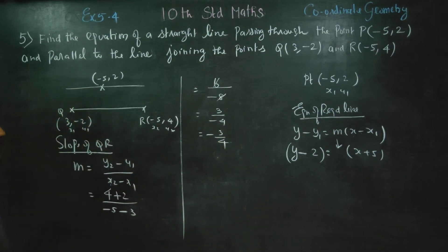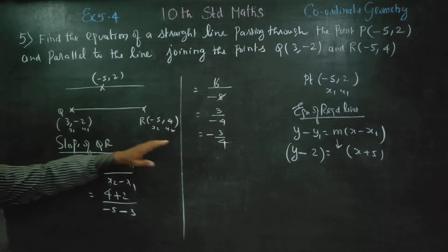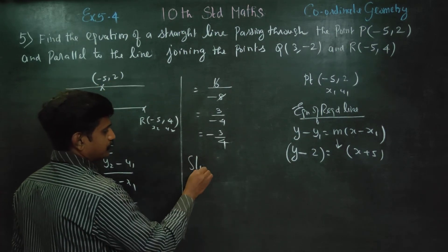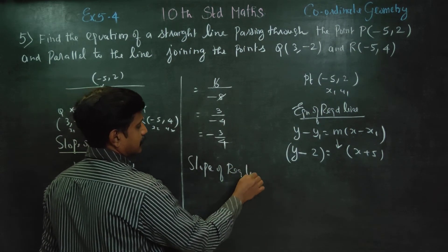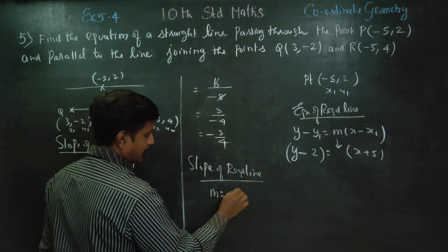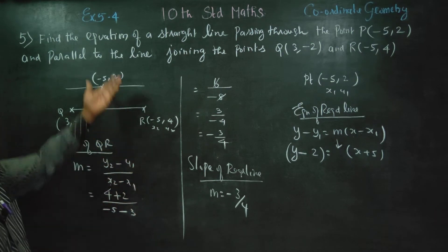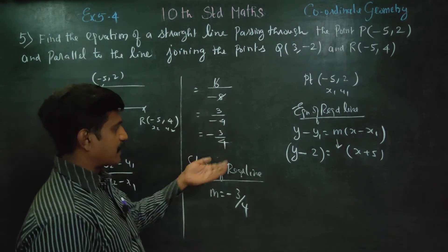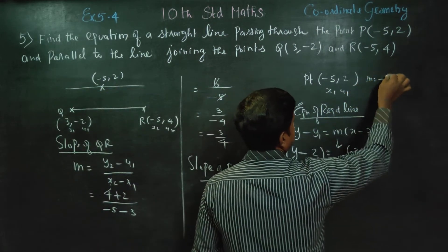So the slope of QR is minus 3 by 4. Since the required line is parallel to QR, the slope of the required line m is also equal to minus 3 by 4, because parallel lines have equal slopes.